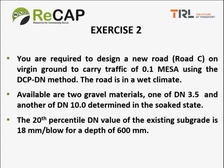The question is which route will be the least expensive to build, and that will almost certainly depend on the structural designs we can come up with. Exercise two, which we will come to after exercise one: you are required to design a new road, Road C, on verging ground to carry traffic of 0.1 million equivalent standard axles using the DCPDN method. The road is in a fairly wet climate. Available are two gravel materials, one with DN 3.5 and another with DN 10.0, determined in the soaked state. The 20th percentile DN value of the existing subgrade is 18 millimetres per blow to a depth of 600 millimetres.